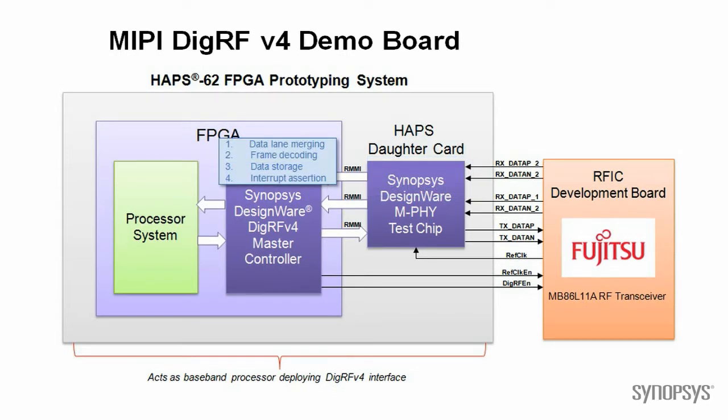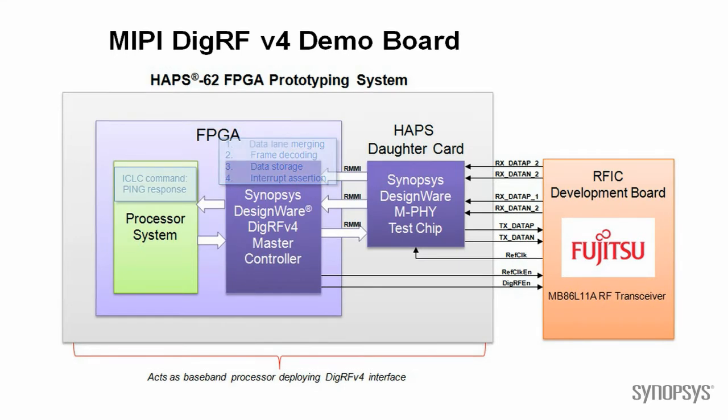The DIGAR FV4 controller performs data lane merging in case two RX lanes are active, performs frame decoding, and then stores the data in the associated FIFO, asserting the corresponding interrupt. Finally, the baseband detects the interrupt and accesses the DRF controller to retrieve the received data, which is the ping response message.